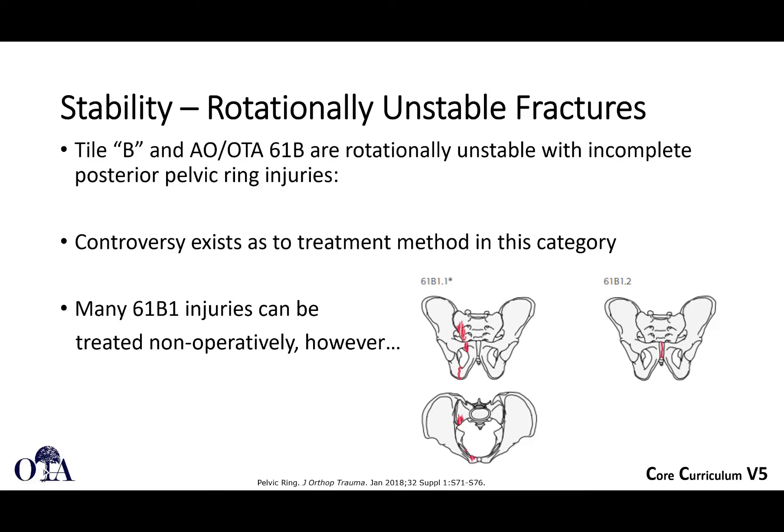Tile Type B, or OTA 61B, fractures are rotationally unstable but vertically stable, representing incomplete posterior pelvic ring injuries. There is some controversy here — many of these can be treated non-operatively, but many are also treated operatively.